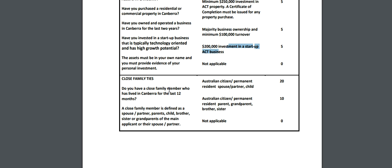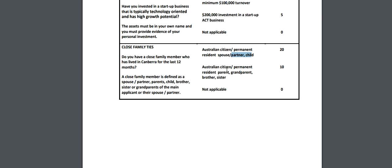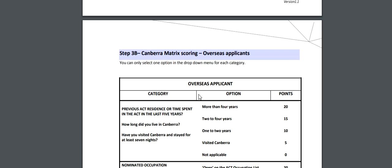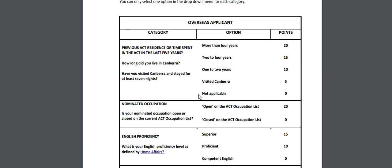For close family ties: if you have a close family member who has lived in Canberra for at least 12 months and is an Australian citizen, permanent resident, spouse, or partner, that gives 20 points. Parent, grandparent, brother, or sister gives 10 points. Now this section covers overseas candidates: previous ACT residence or time spent in ACT in last 5 years - more than 4 years gives 20 points, with points decreasing below that. If you have visited Canberra and stayed for at least 7 nights, you also get bonus points.